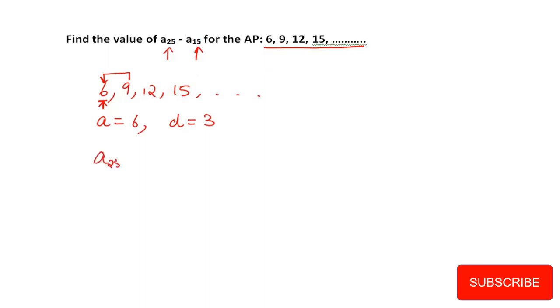Now what do we have to find? a₂₅. We know that aₙ = a + (n-1)d. So it will be a + (25-1)d. The value is a + 24d, which is 6 + 24(3). So you will get 6 + 72, which equals 78.